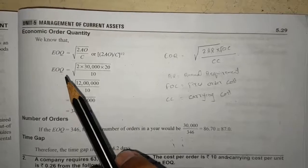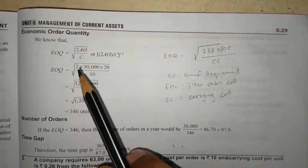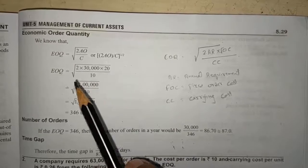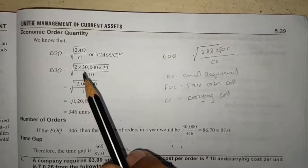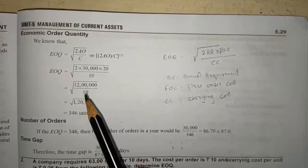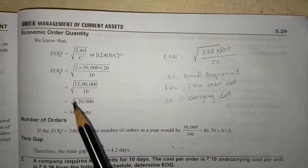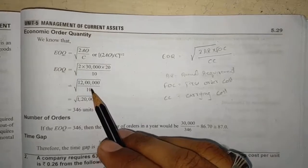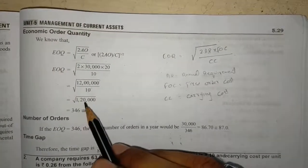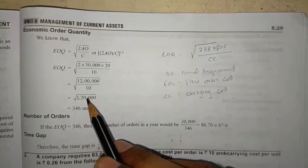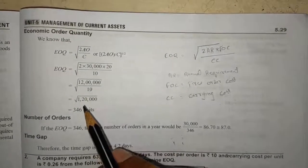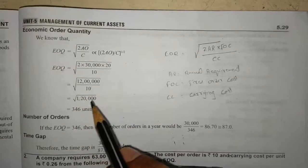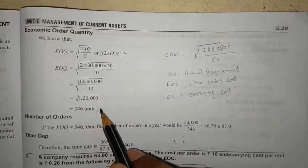EOQ equals square root of 2 times 30,000 times 20 divided by 10. We will get this, then divide by 10. After simplification, we get 12 followed by four zeros under the square root. Taking the square root, we get 346 units.